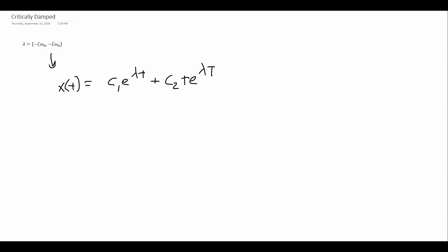Again, this is the case where our lambdas are repeated. It's going to have this form with a t term in front of the second exponential. We don't see this when we don't have a critically damped system.